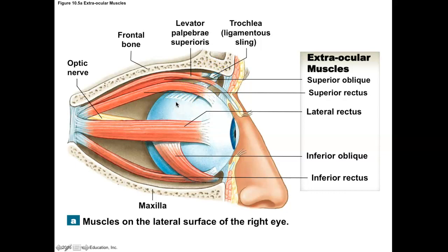Looking at the actions of the obliques, the superior oblique does something counterintuitive. You might think that, being a superior muscle, it moves the eye superiorly, but in fact it does the opposite — it looks down and laterally, and rolls the eye inward in torsion. The inferior oblique looks up and laterally and rolls the eye outward. So both obliques can roll the eye.